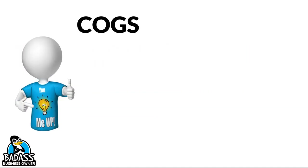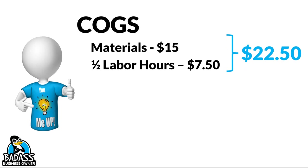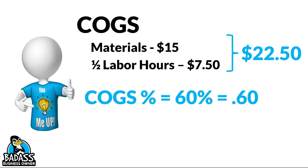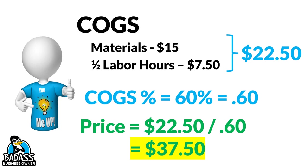One more — this time a product. Materials come to $15, and it takes half a labor hour to make it, so that's $7.50 in labor, for a total cost of goods of $22.50. If cost of goods is supposed to run about 60% in this product-based business, take $22.50 divided by 0.60, and you get a price of $37.50. All we're doing is taking our cost of goods dollars and dividing by the target percentage to find the minimum price needed to hit our profit goal.